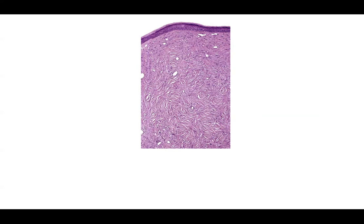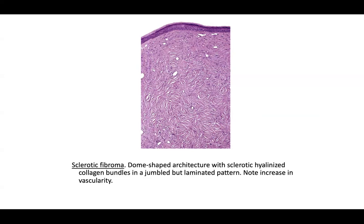Sclerotic fibromas are associated with Cowden disease. Instant recognition earns you a point on the exam. Features include a dome-shaped architecture, sclerotic hyalinized dermis with collagen bundles in a laminated or slit-like pattern. Some describe it as a plywood pattern. You can also see some vascularity. Differentials include late-stage erythema elevatum diutinum with little inflammation, but look for vascular destruction and remnants of vasculitis elsewhere on the slide.